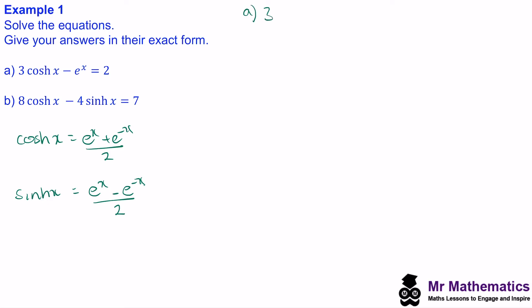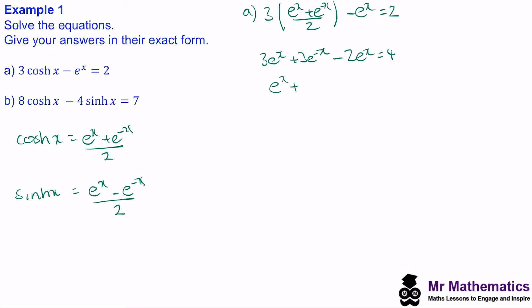So we have three cosh of x, or three lots of e to the x plus e to the minus x over 2, minus e to the x, and this is equal to 2. We'll expand these brackets and multiply everything by 2. So we get 3e to the x plus 3e to the minus x, minus 2e to the x, equals 4. We can collect these two terms, so we get e to the x plus 3e to the minus x is equal to 4.